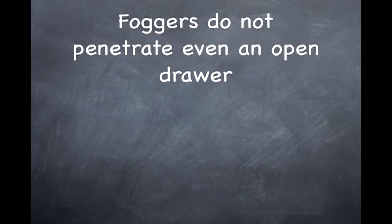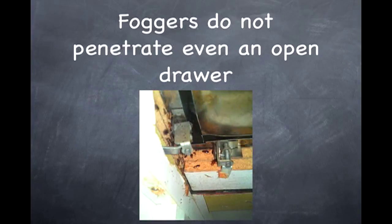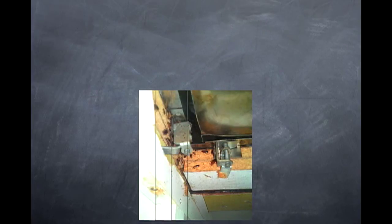Foggers also are at the mercy of air currents and they don't penetrate very well. You can have all your drawers open, the cabinets open, and set off a bomb and it goes straight up in the air, but it's not going to get back underneath the sink or the back of the drawer where a nest of roaches may be, they'll just live to fight another day.